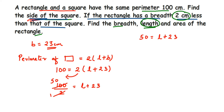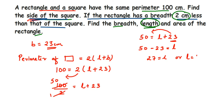We have to find only l, so I'm going to transpose 23 to the other side. Since 23 is in addition, it comes in subtraction: 50 minus 23 equals l. 50 minus 23 gives 27, so l is equal to 27 centimeters.